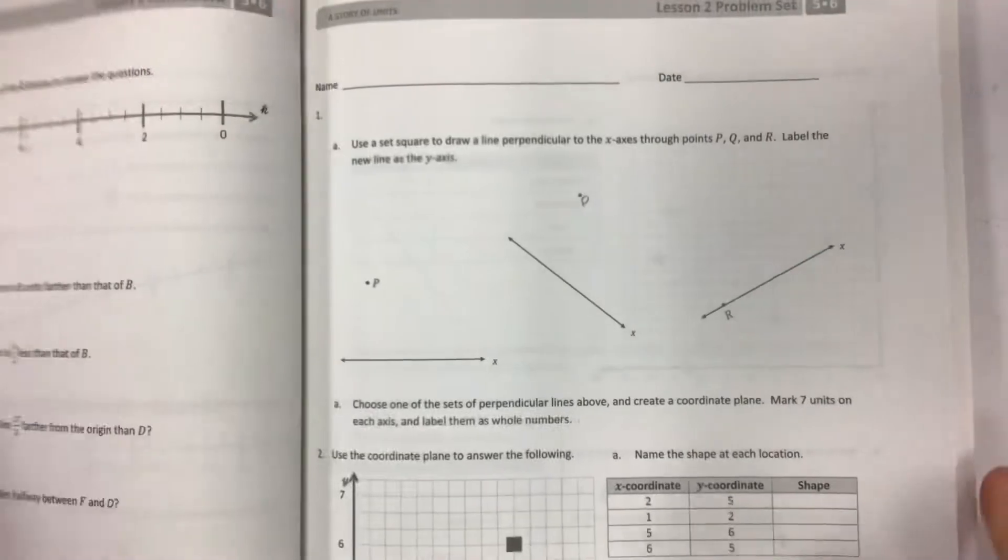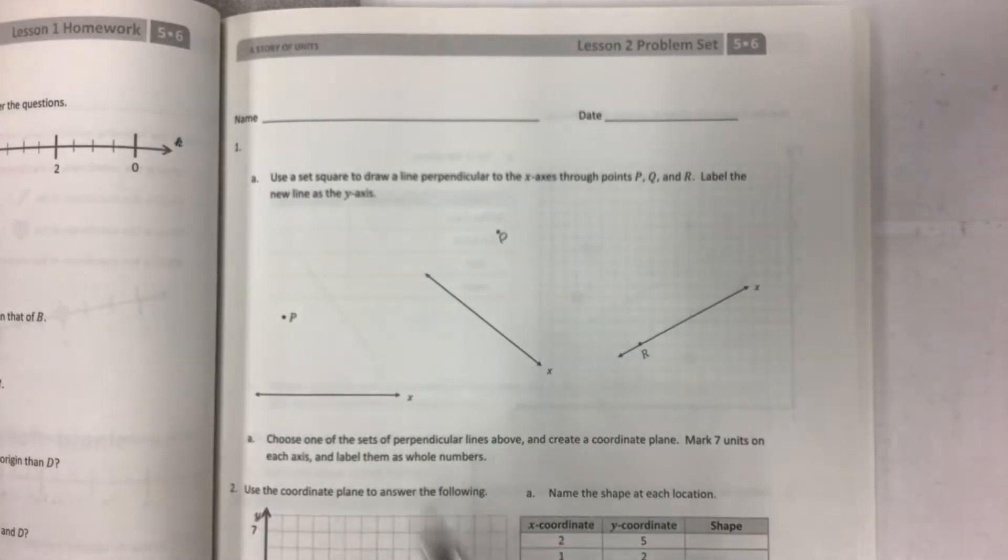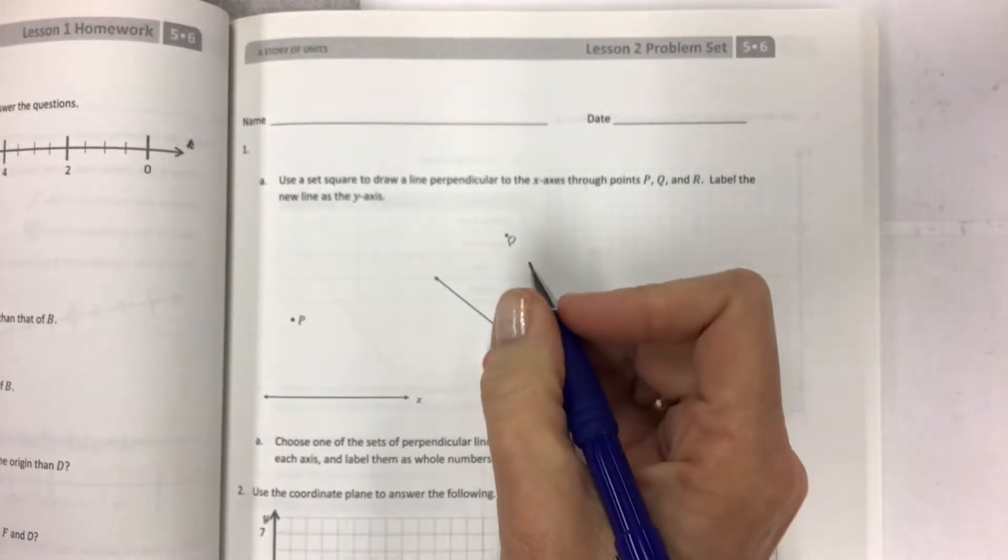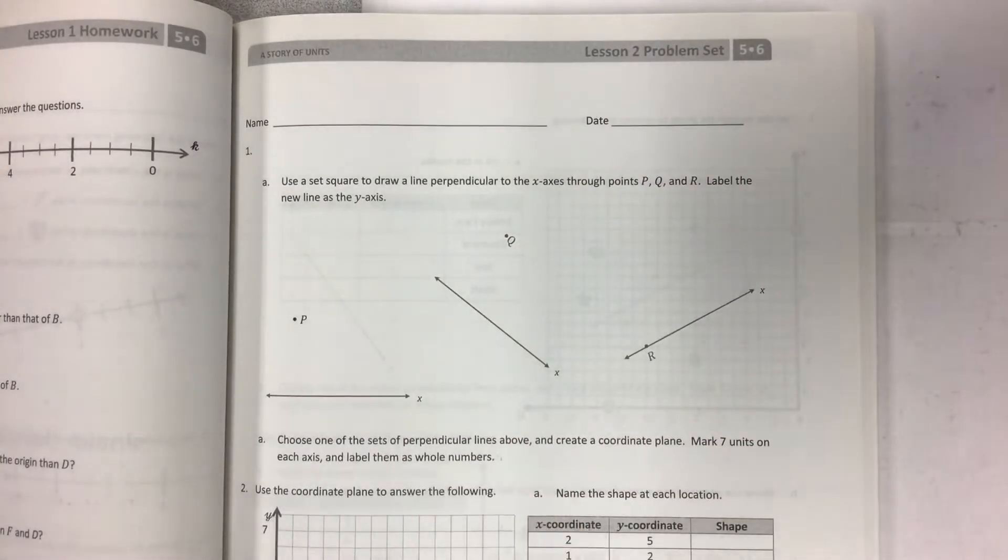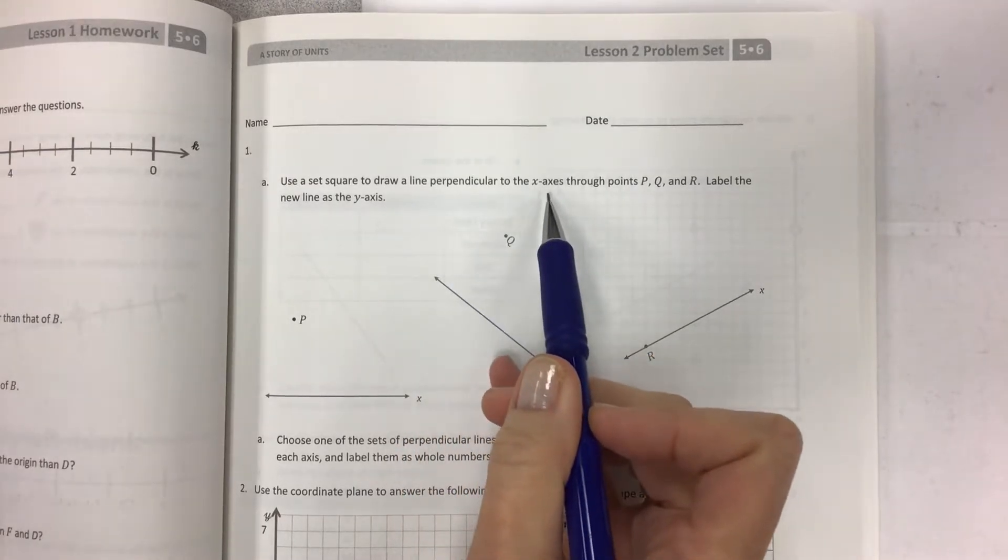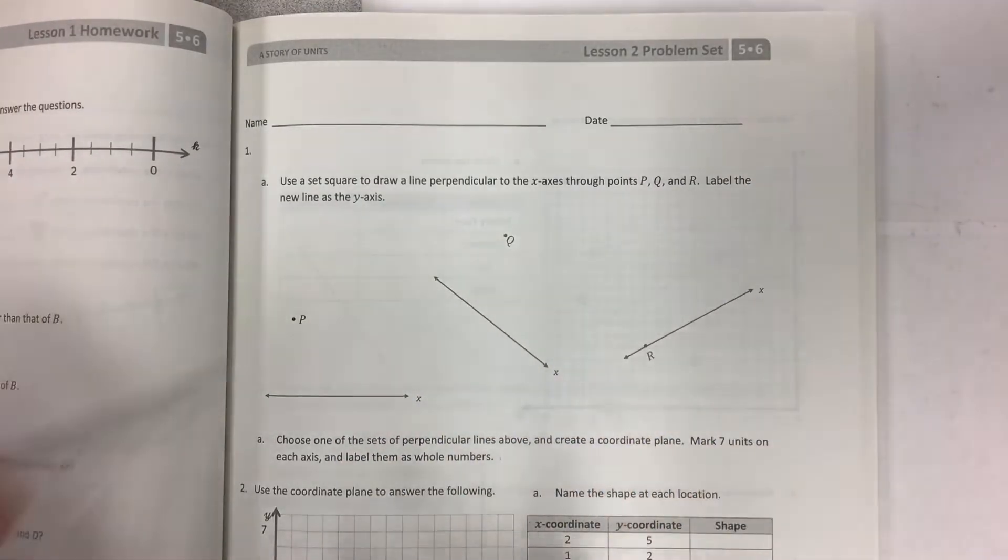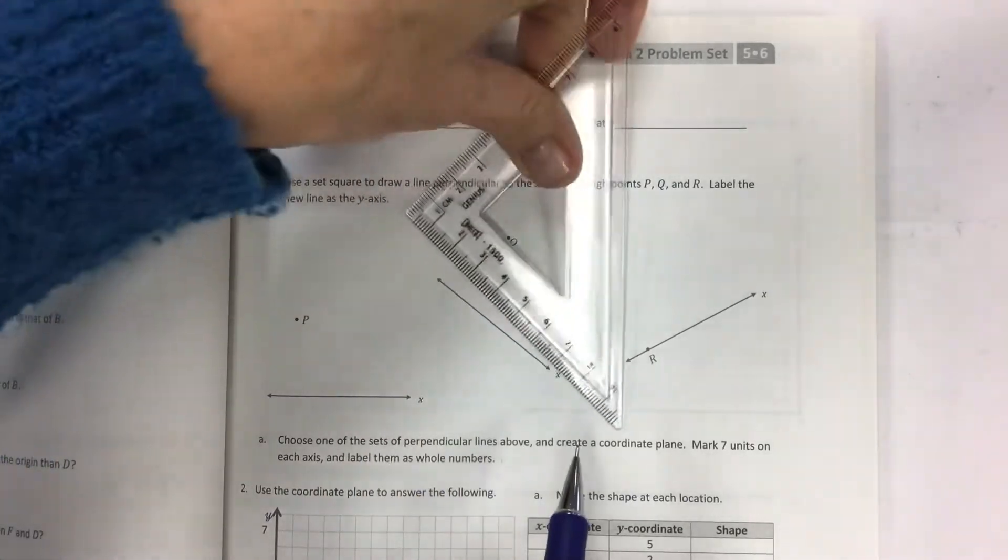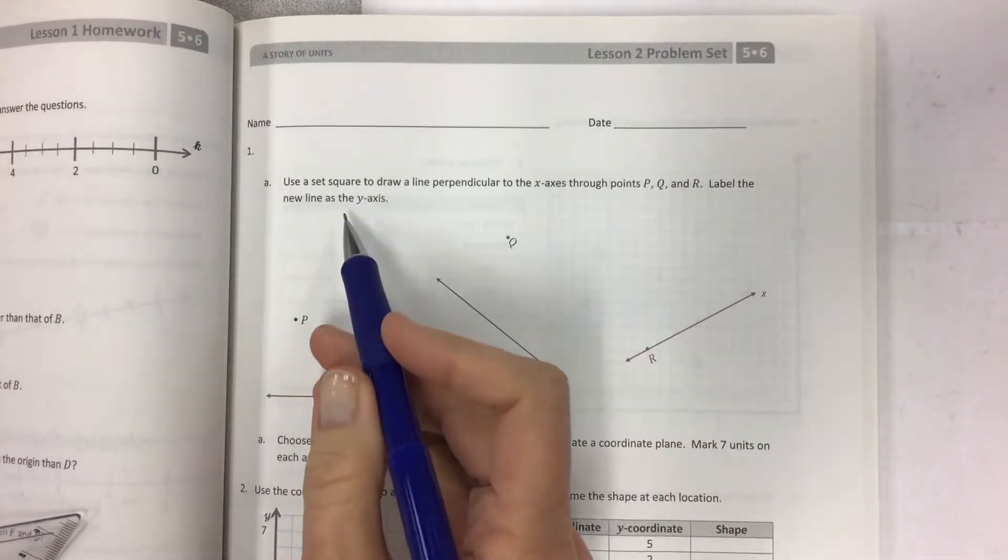So keep those notes handy. If you need more time, back it up and replay or pause on those pictures. So in the book, we're going to get started. And we're going to actually construct a few of these coordinate planes so that you guys can kind of get practice at how to count and how to create these. So it says use a set square to draw a line perpendicular to the x-axis through points P, Q, and R.